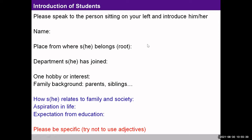One of my hobbies and interests is plantation — I believe people must plant more and more trees. My family background: my parents stay in Nagpur. My mother is a teacher, my father works as an accountant. I have one younger sibling, my sister. We all are a part of society and we need to live in harmony with it. My aspiration in life is to be more respectable in society through my work rather than just qualifications. People should know you by the work you do.